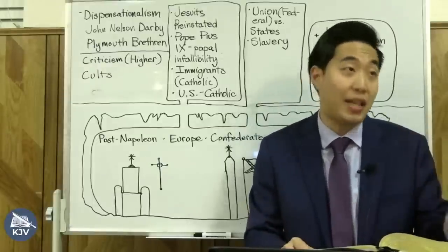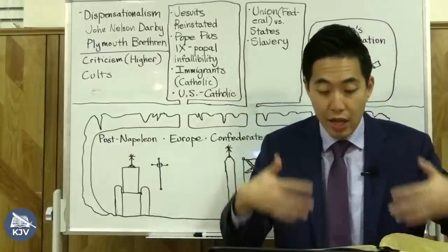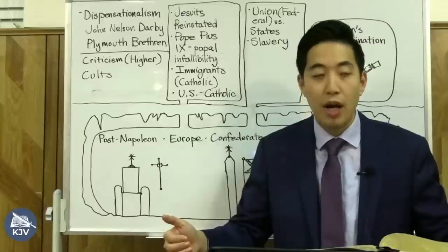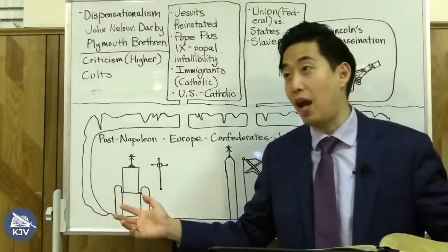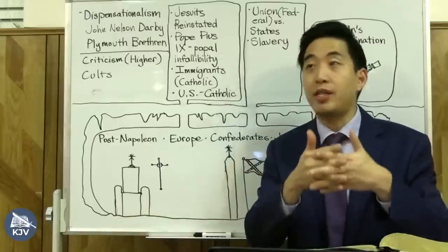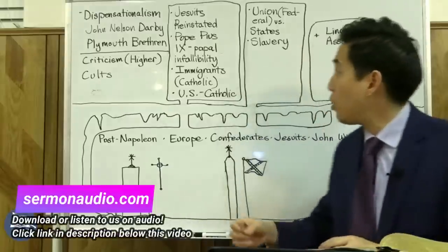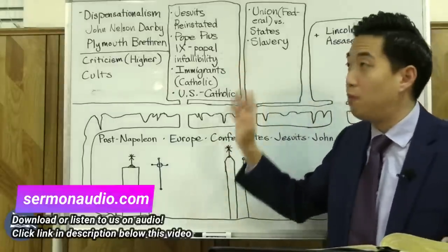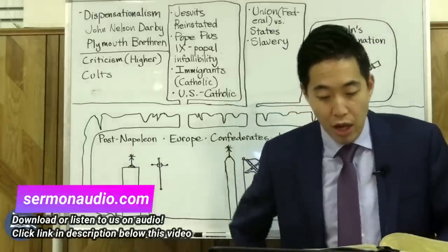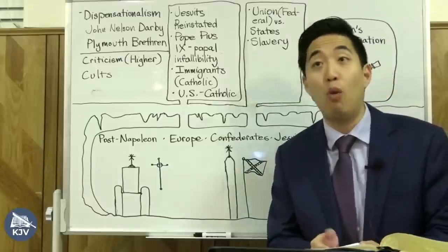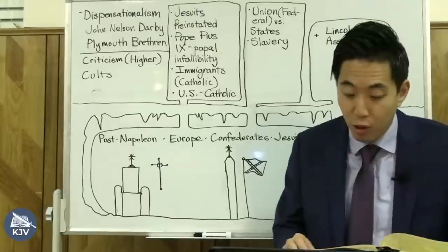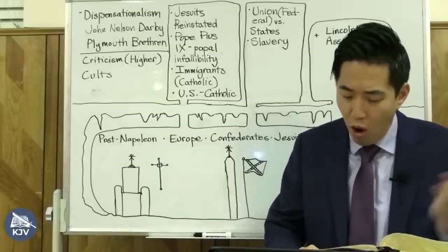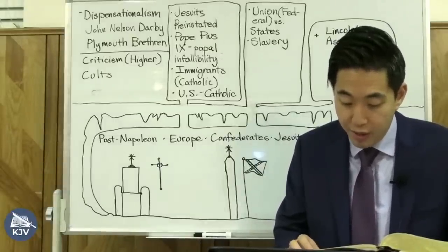Look at verse 8: 'Knowing that whatsoever good thing any man doeth, the same shall he receive of the Lord, whether he be bond or free.' God never told the slaves to have an uprising — he said to submit to the master. That was the culture and institution of that time. Just like taxes, which God doesn't like either, God says the point is we are to be good citizens in that society. So during that time period when slavery existed, you don't blame the Bible. If they followed the Bible's way of doing things, there wouldn't have been a Civil War.